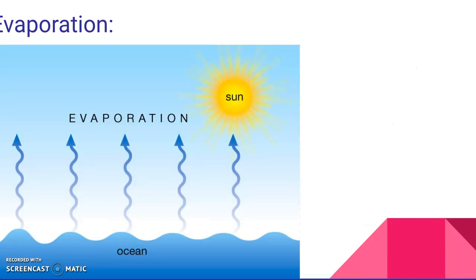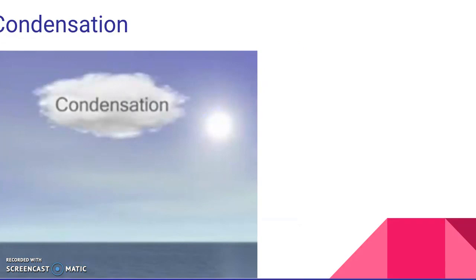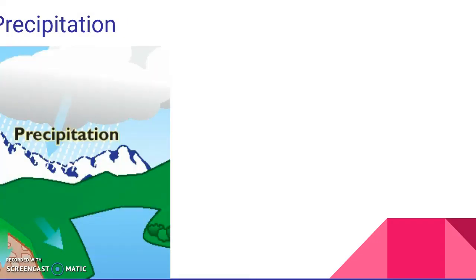Here you can see ocean water evaporating because the sun is heating the water. That evaporated water then condenses and turns into a cloud — this process is known as condensation. The clouds move and here you see them over a mountainside. The clouds are then full of heavy water and it precipitates, known as precipitation.